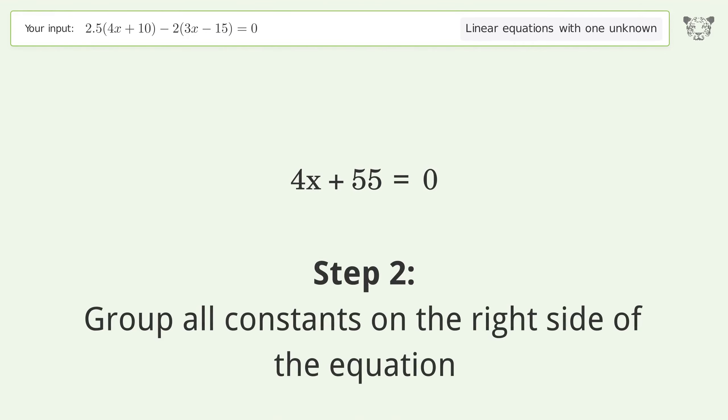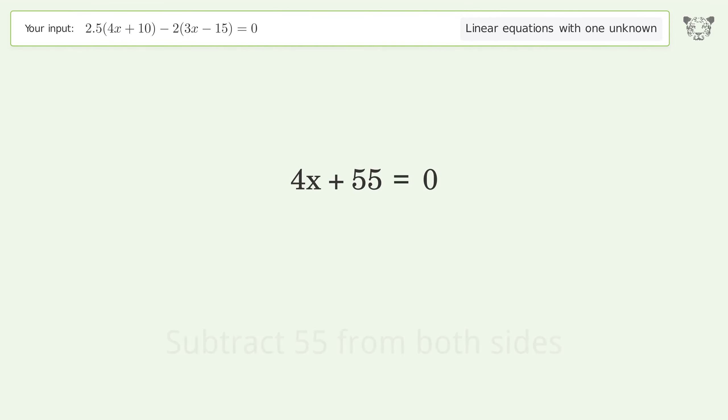Group all constants on the right side of the equation. Subtract 55 from both sides. Simplify the arithmetic.